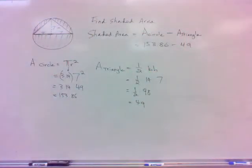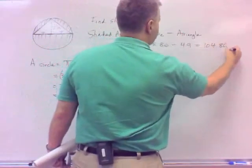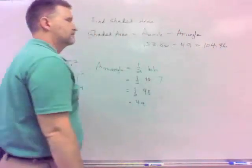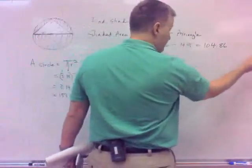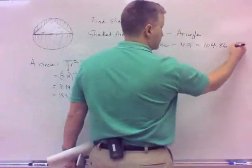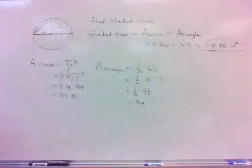So what's the shaded area? What's the difference of those two? 104.86. What is units? Well, it's area, so area is always square. So it's inches square. 104.86 inches square.